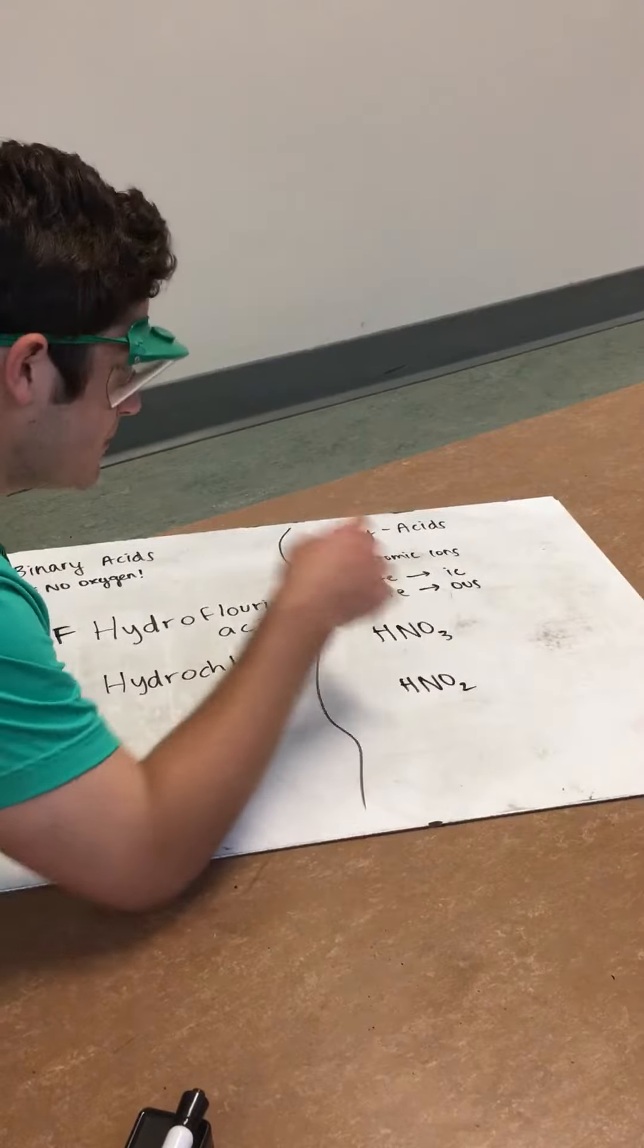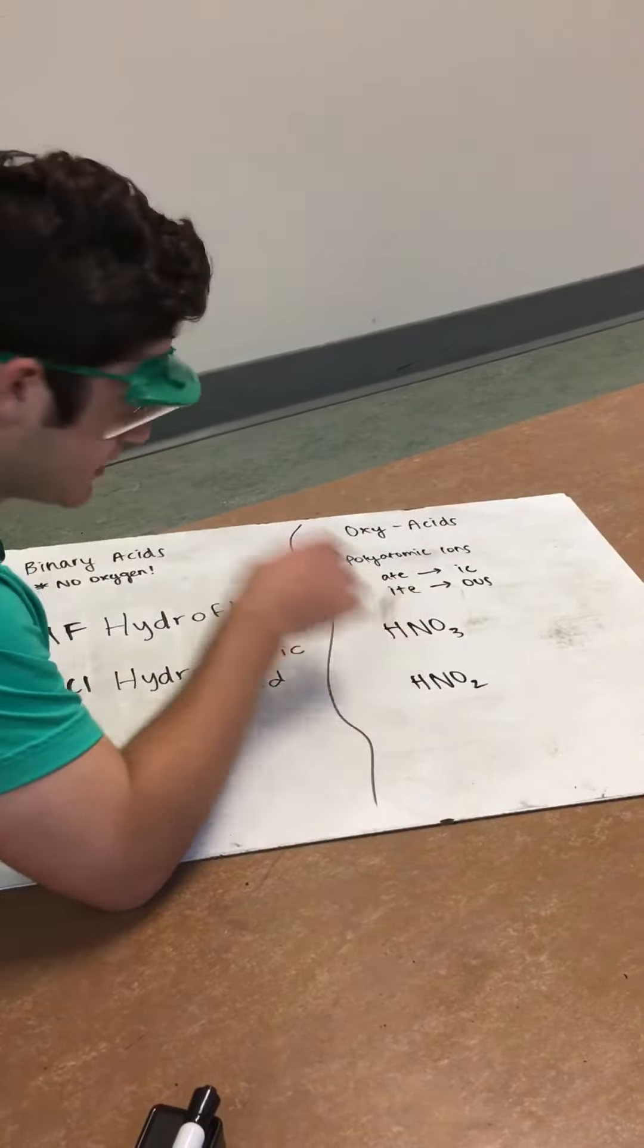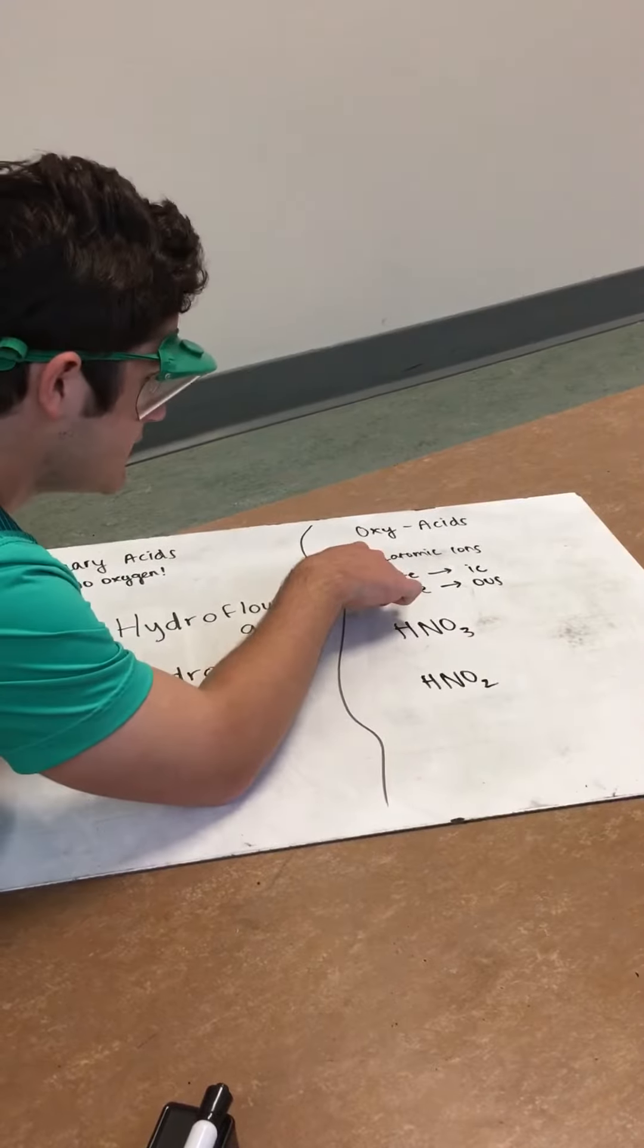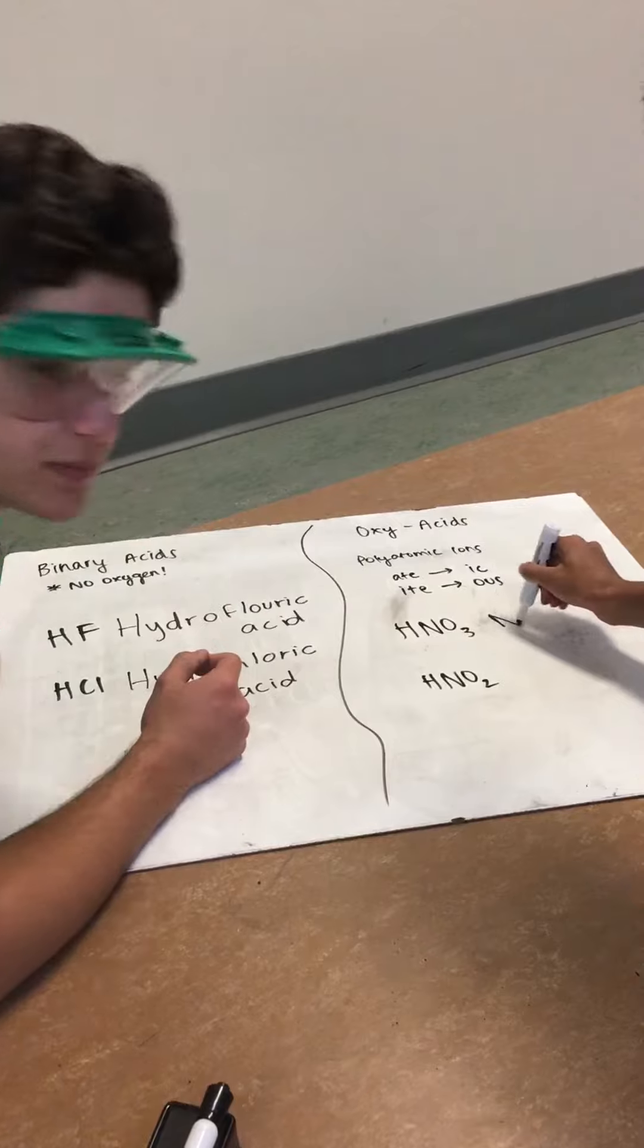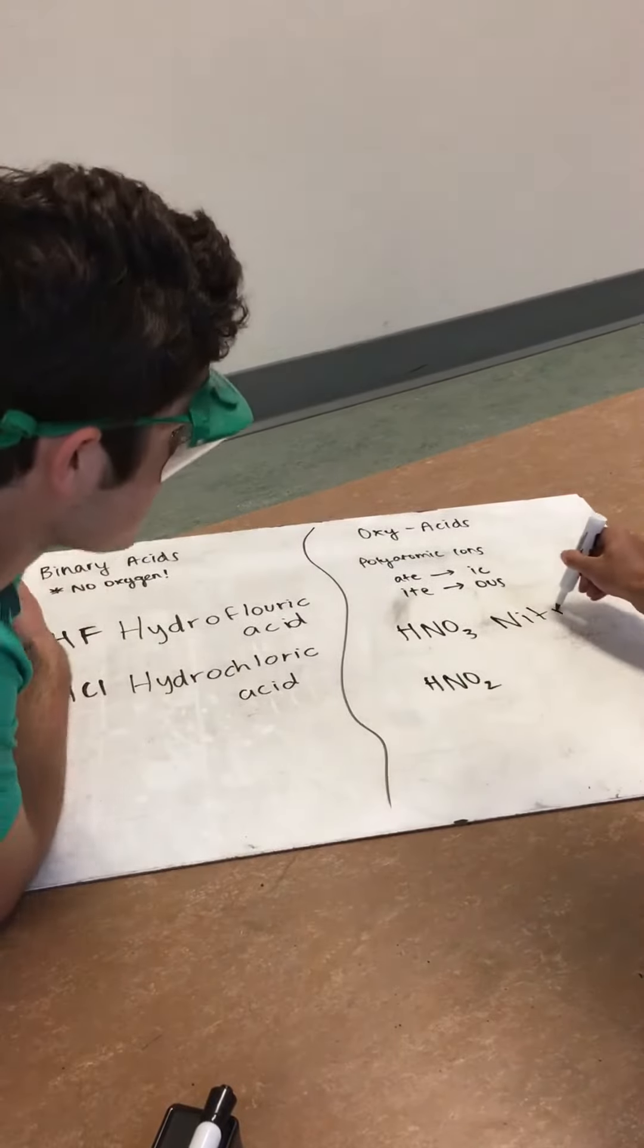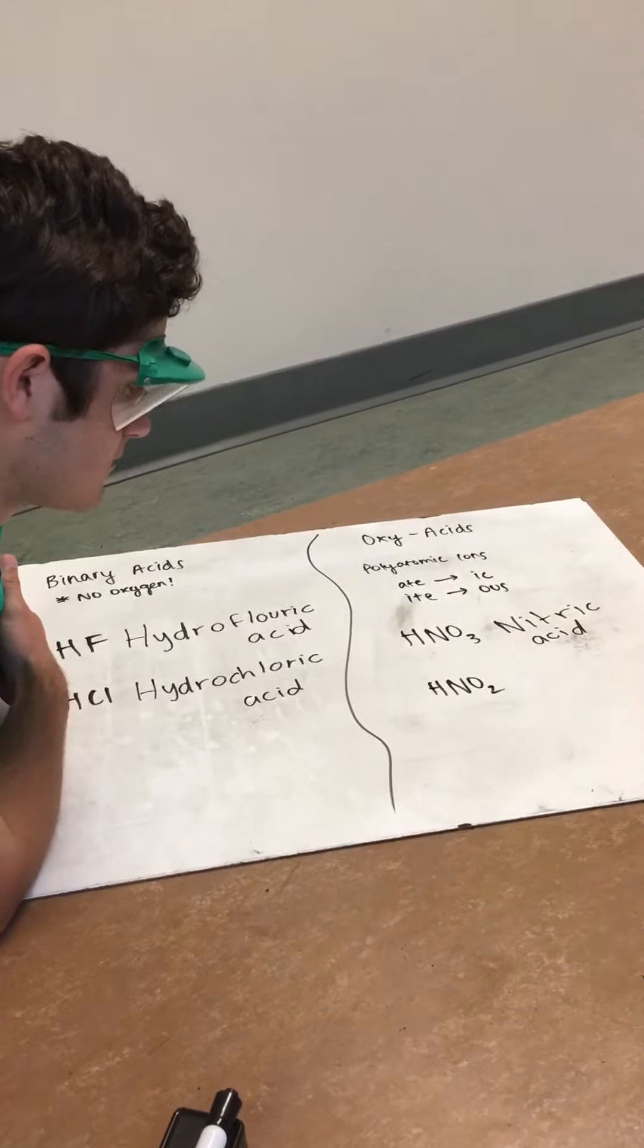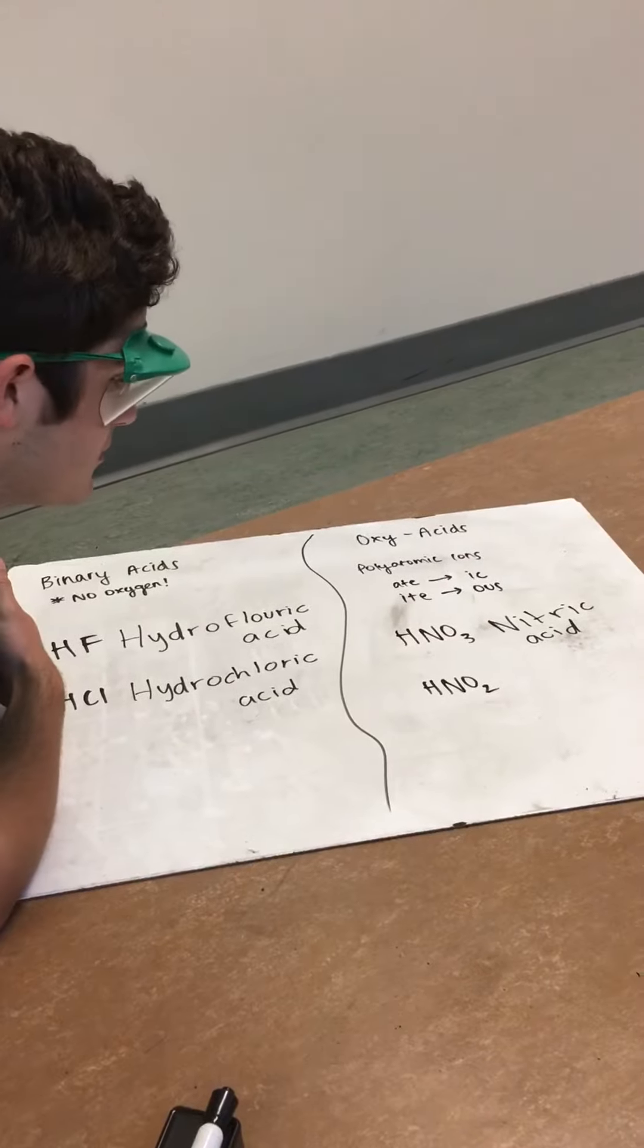So HNO3, you wouldn't say hydro in this. And since this is nitrate, A-T-E, which is the IC, so it would be nitric acid. And the reason why you don't include hydro at the beginning is because oxygen is present.